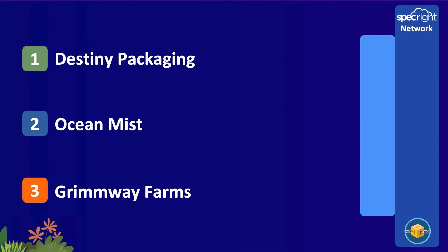Let's keep the solution to three orgs. The first is Destiny Packaging, a leader in flexible packaging. Then Ocean Mist Farms, the largest grower of fresh artichokes in the US. Finally, Grimway Farms is the largest carrot producer in the world. Today, Destiny provides packaging to both Grimway and Ocean Mist, with updates via email and Salesforce Communities.